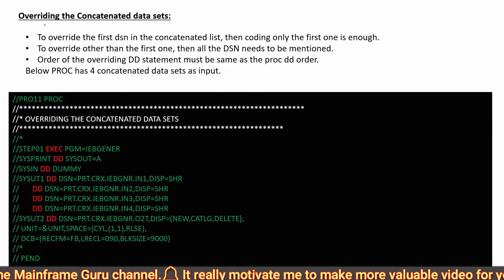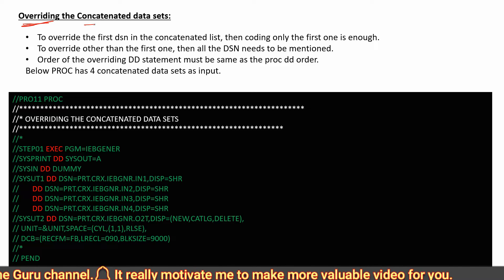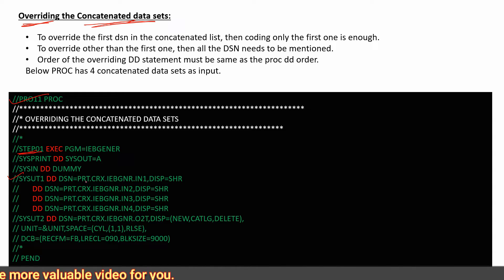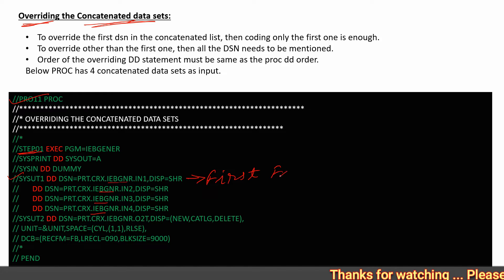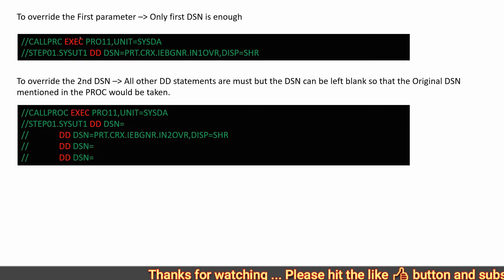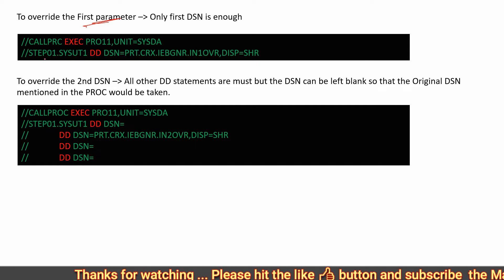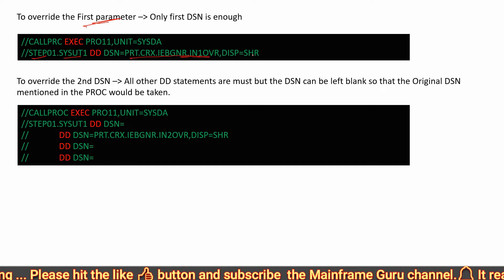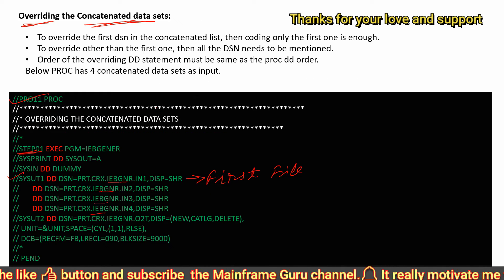The interviewer can also ask: how can you override concatenated datasets? For example, in a program with STEP01, the DD CCOT1 uses four input files as concatenated datasets. If you want to override only the first file, you can use STEP01.CCOT1, provide the updated first file name, and set DISP=SHR.